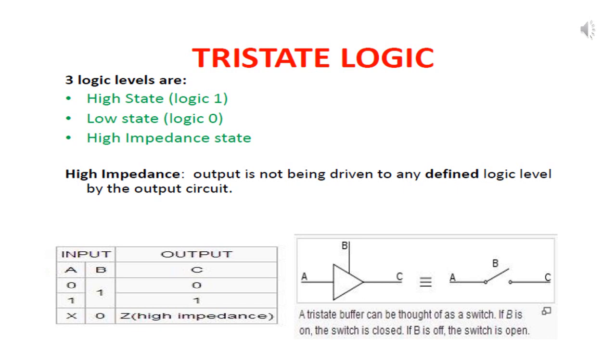Third one is a high impedance state. The high impedance state is called as undefined state. During this state, the output is not being driven to any defined logic level by the output circuit. It is not either a logic 1 or a logic 0.